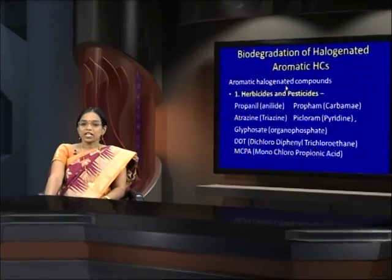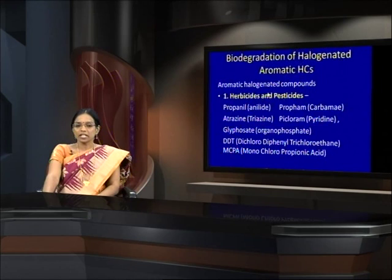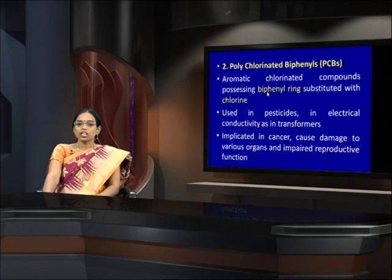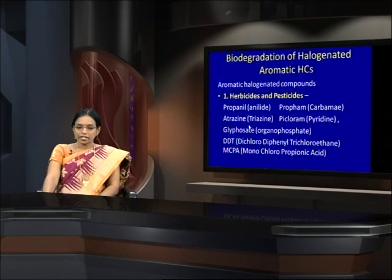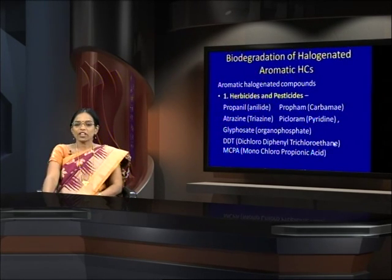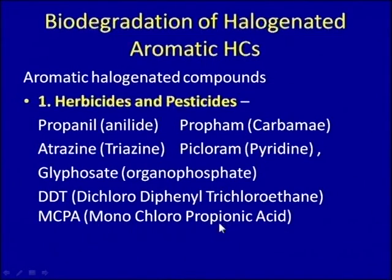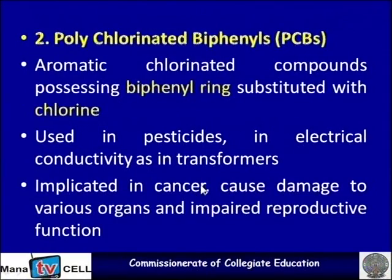For halogenated aromatic hydrocarbons, we can study them under two main heads: herbicides and pesticides, and polychlorinated biphenyls. Herbicides and pesticides include propanil, proform, atrazine, picloram, glyphosate, DDT, and MCPA. DDT is dichlorodiphenyltrichloroethane and MCPA is monochloropropionic acid.